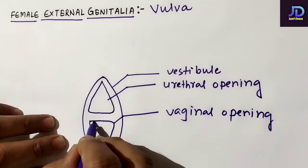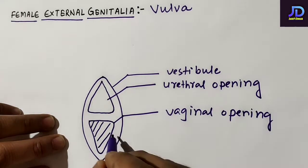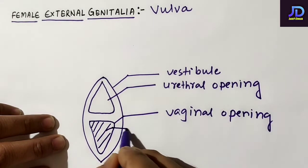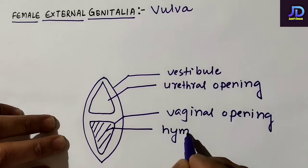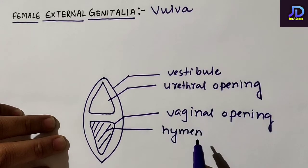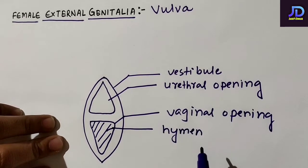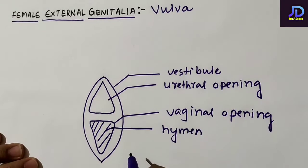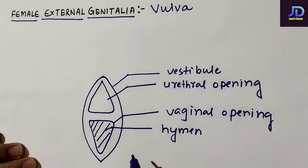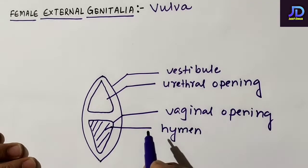The vaginal opening or orifice is covered or guarded by one thin membrane, and this thin membranous structure is known as hymen, which is generally found in case of a virgin female. Now this vestibule is covered by two flaps of skin.